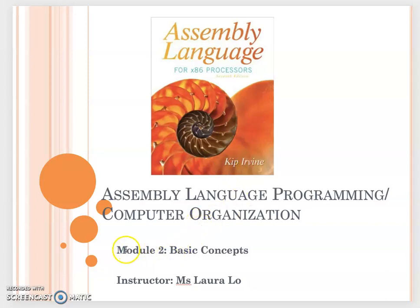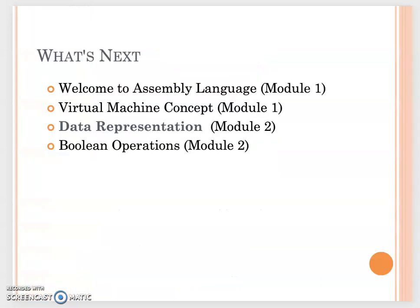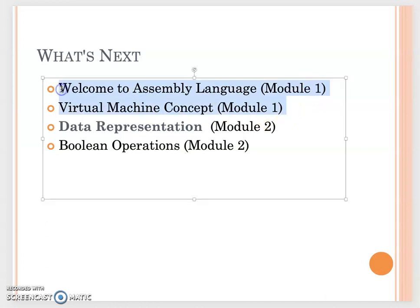In Module 2, we will talk about basic concepts from assembly language. We will complete Chapter 1 from the textbook. Chapter 1 has four sections. We already covered the first two in Module 1 last week. So this week in our two class lectures, we will talk about data representation on Tuesday, then on Thursday we will focus on boolean operations.